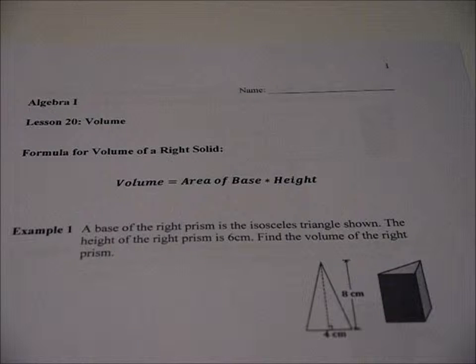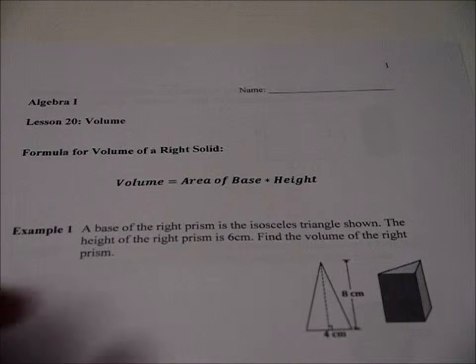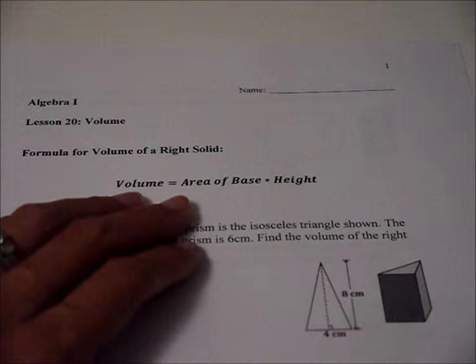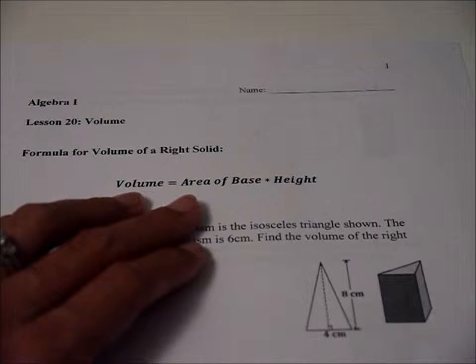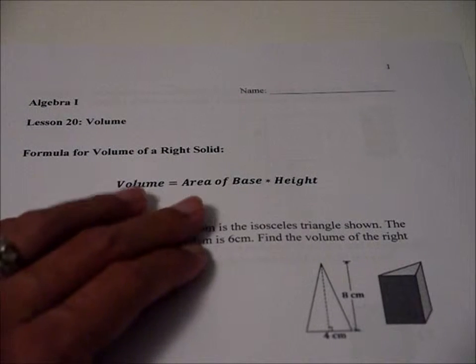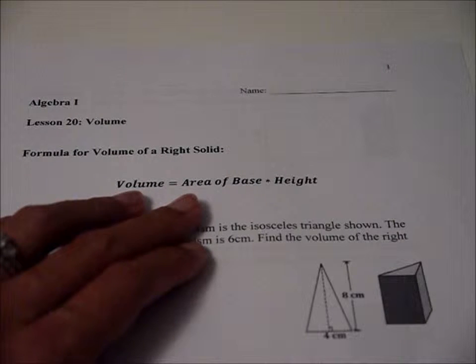There is a picture in the book of a cube and so they talk about cubic units. But we're going to just jump into the equation or the formula. Volume equals area of base times the height. Not to be confused with lateral surface area which was perimeter of the base times the height.